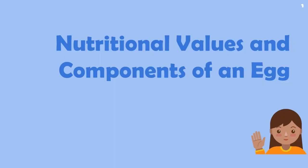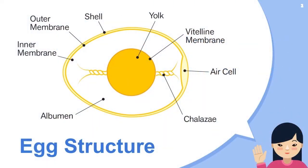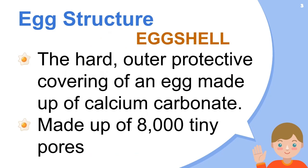Today we're going to talk about the nutritional values and components of an egg. We're going to start with the egg structure. You can see we have the different parts of an egg: the shell, the outer membrane, the inner membrane, the albumin, the chalaza, the air cell, the vitelline membrane, and lastly the yolk. Later I'm going to tell you the different parts and their functions.